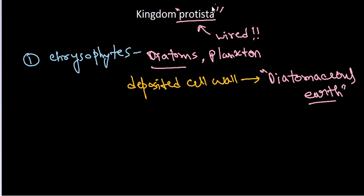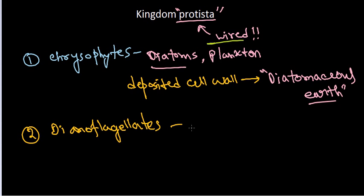The second type is the dinoflagellates. These organisms are mostly marine and they are also photosynthetic. That means they can produce their own food using the chlorophyll that is present there.